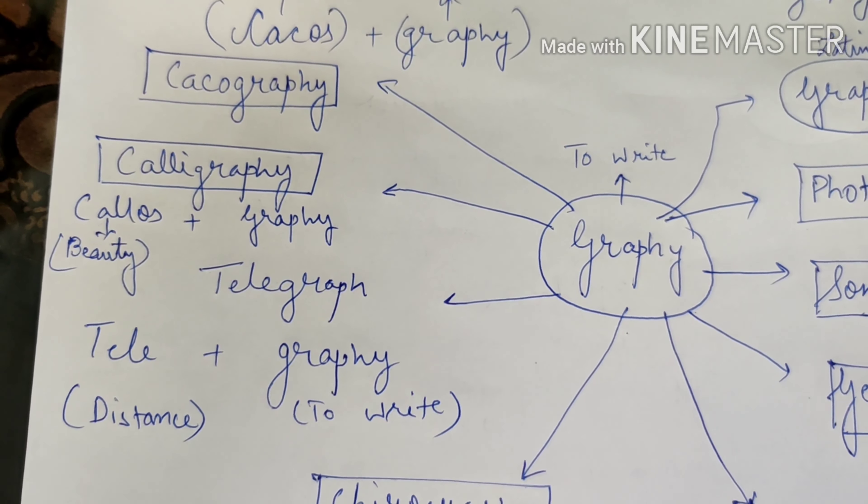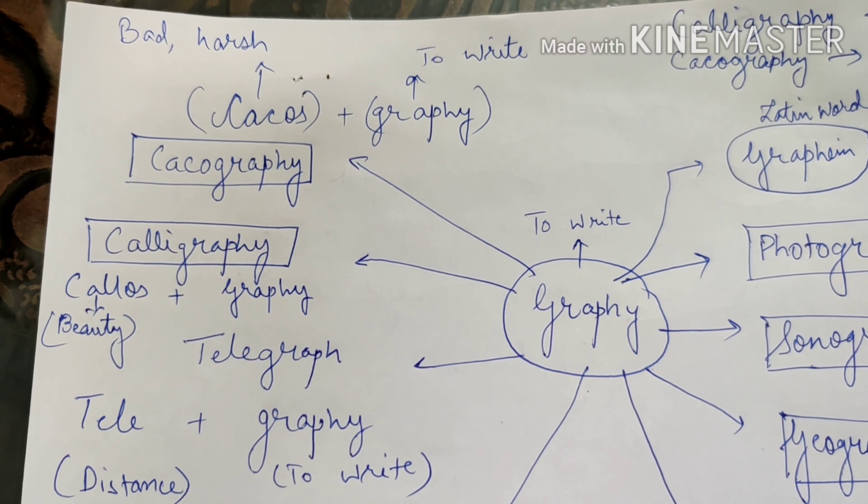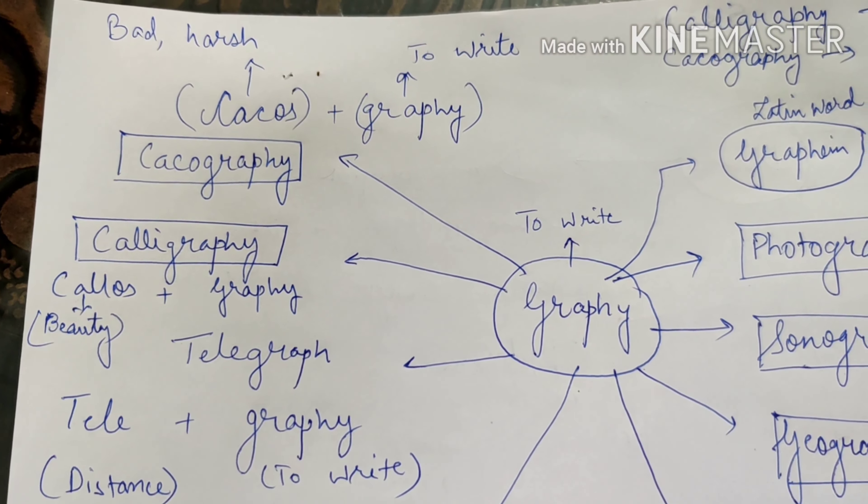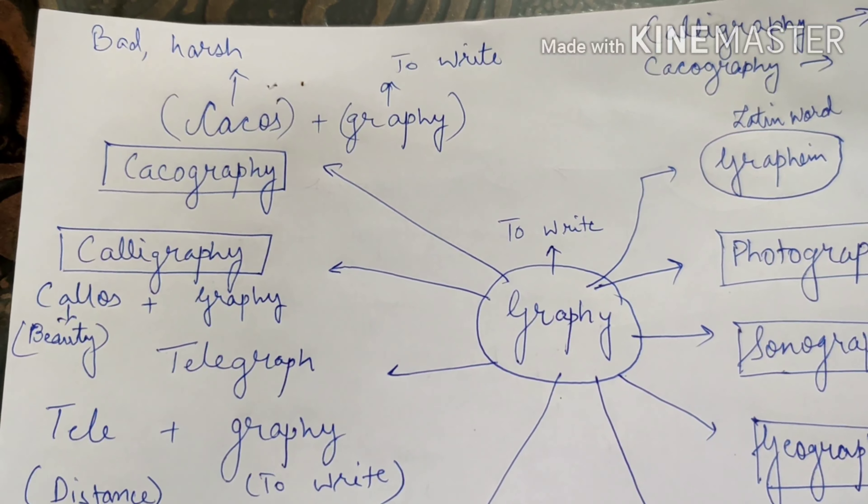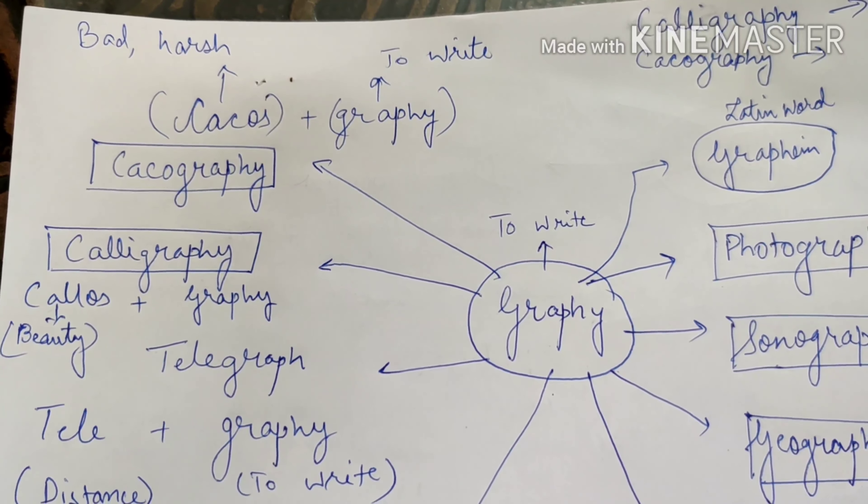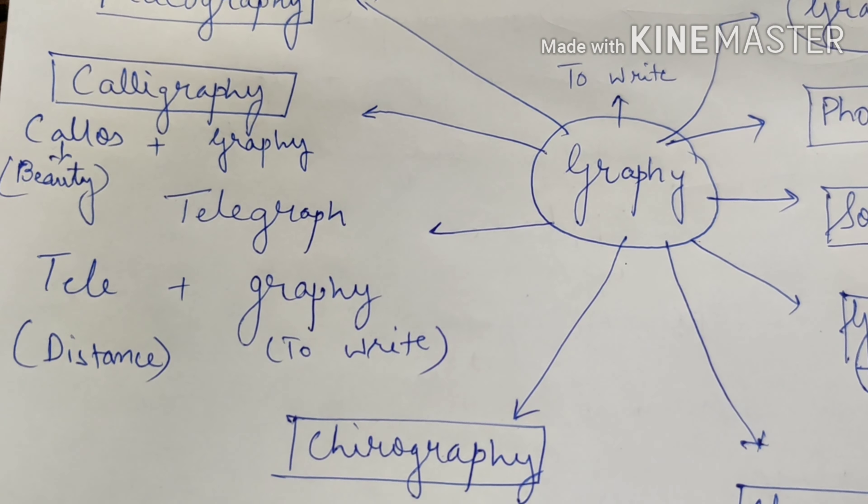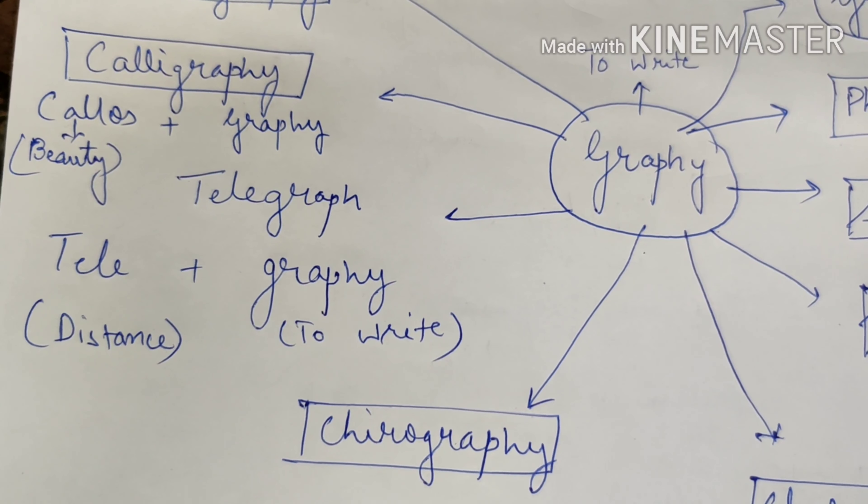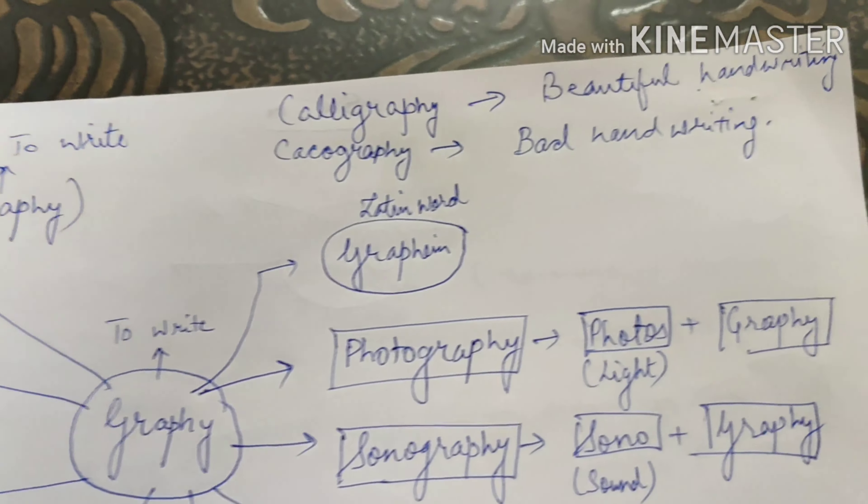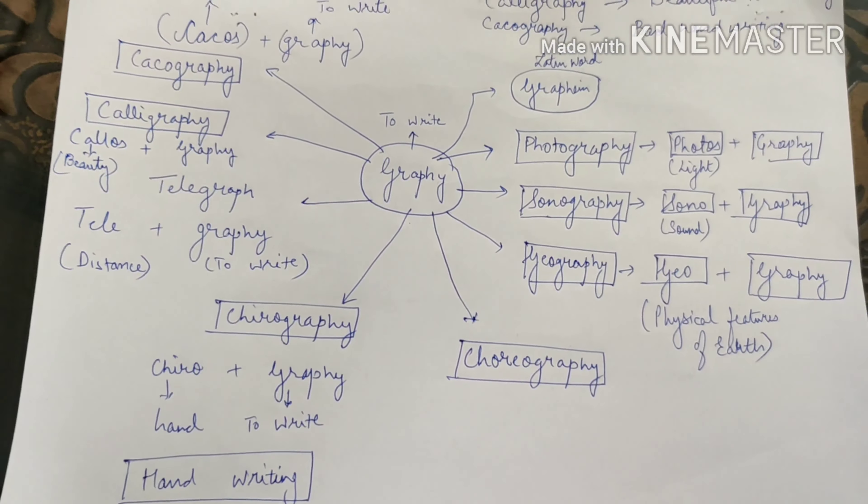Next two words are again very very commonly used words and again very very important ones. Cacography and calligraphy. Caco refers to bad or harsh. Another word out of caco is cacophony. Phony means sound. Cacos means hard or harsh or bad. So when you refer to bad or harsh sound you refer to cacophony and when it's a bad handwriting it is a cacography. Similarly calligraphy. When you refer to beauty you use the word root callos. Callos refers to beauty. So beautiful handwriting is referred as calligraphy. Calligraphy is beautiful handwriting. Cacography is bad handwriting. So these are the words we covered out of graphene.